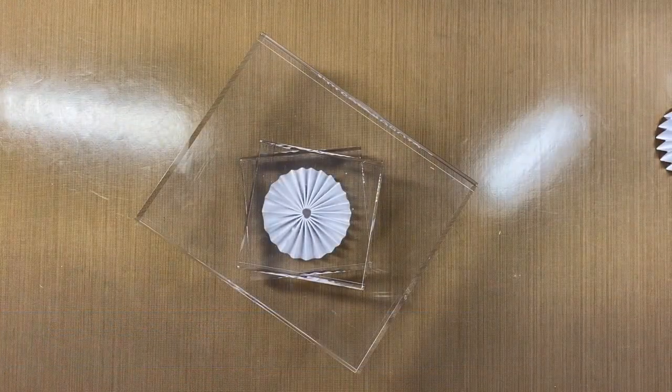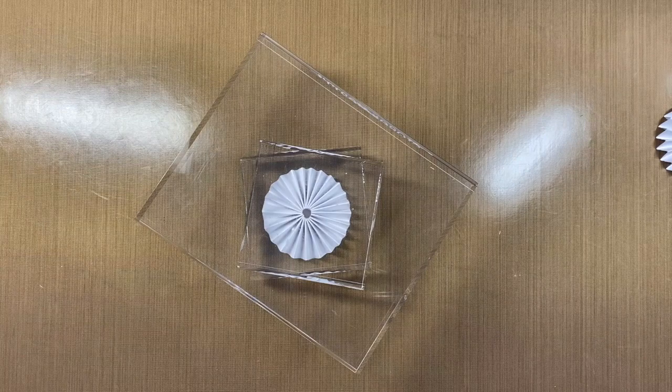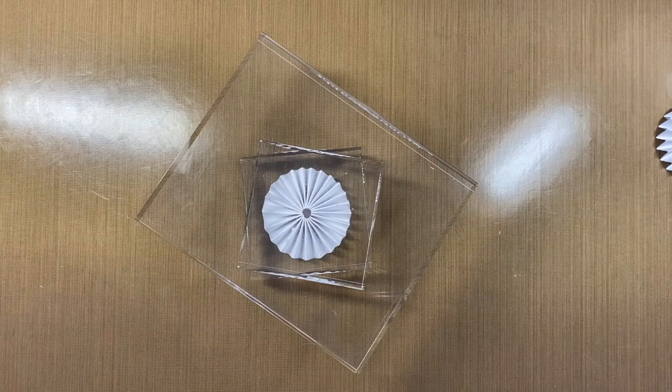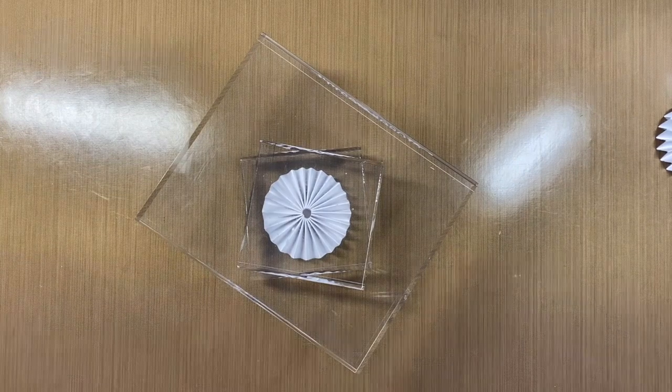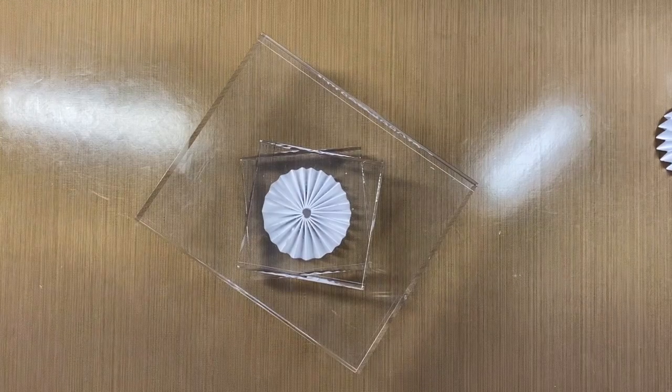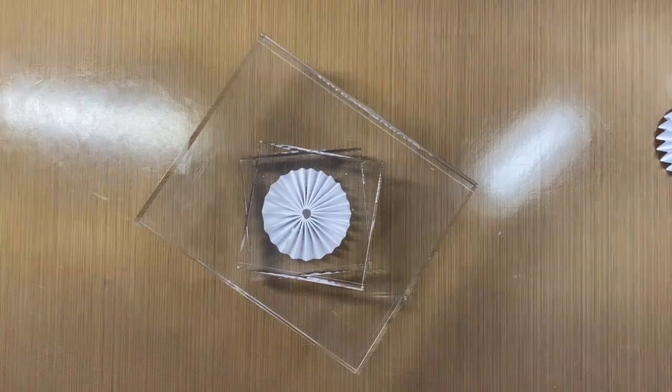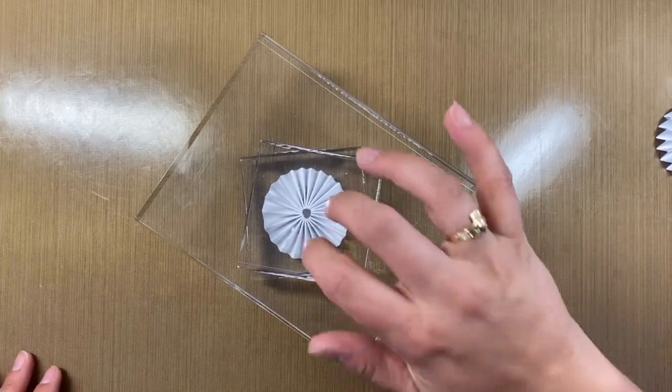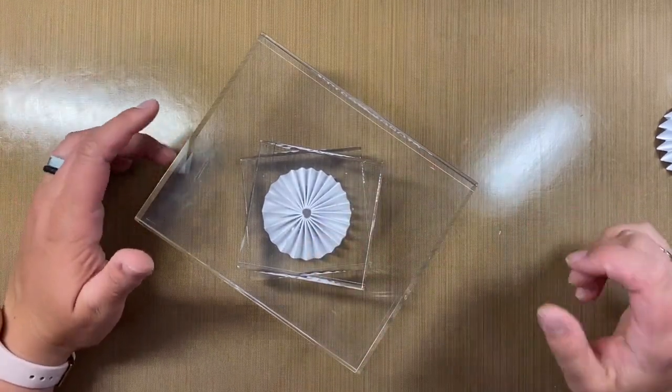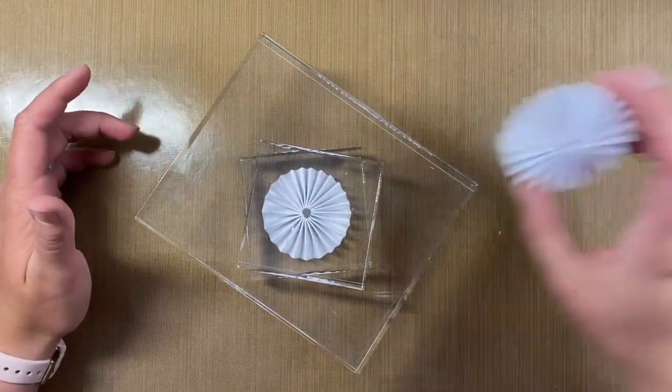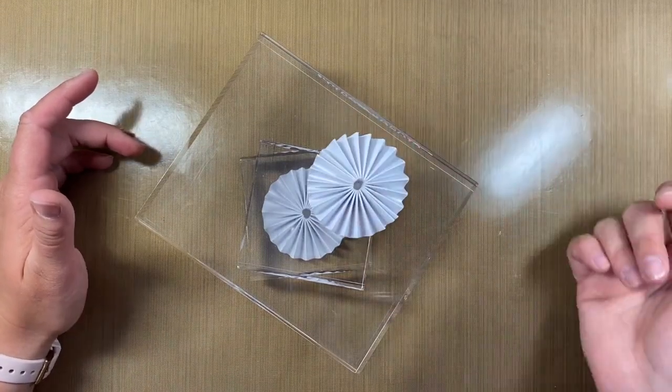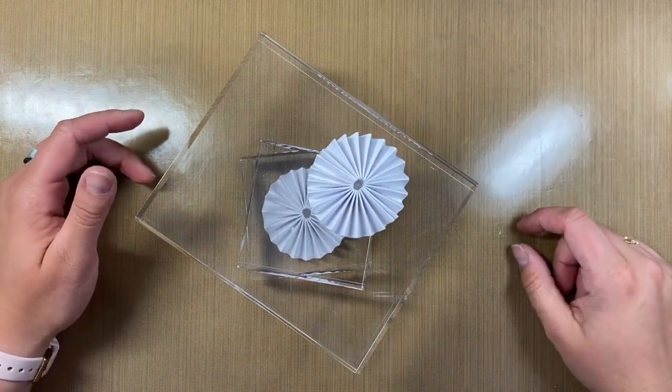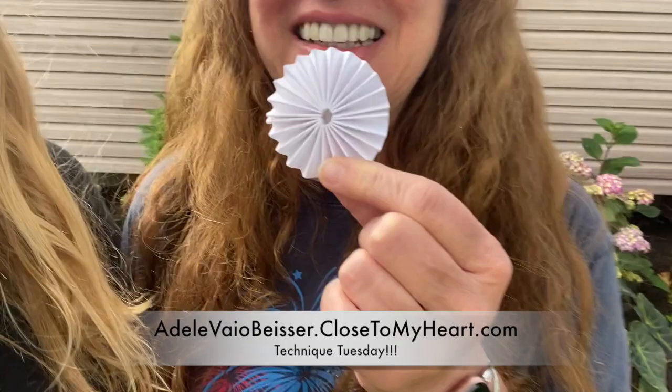But super, super simple technique. It does take a little bit of time and patience, but it looks great. And you really can do it with any cardstock. And all you really need is paper, a trimmer, and a little bit of liquid glass and then something heavy to kind of put on top of it. But it really spruces up pages or cards or anything like that. They're super cute. So, all right, there you have it. And this is our paper pinwheel.